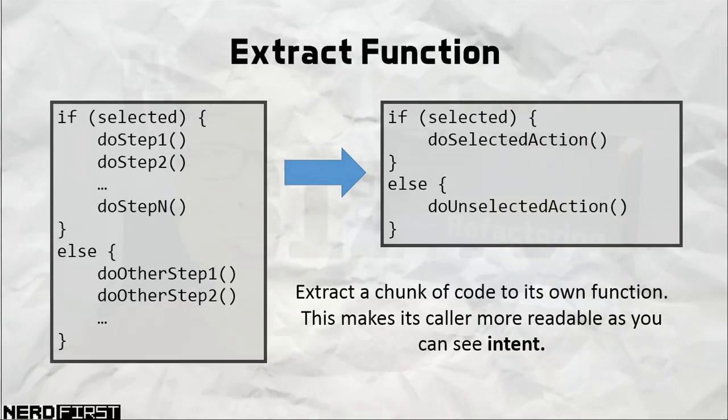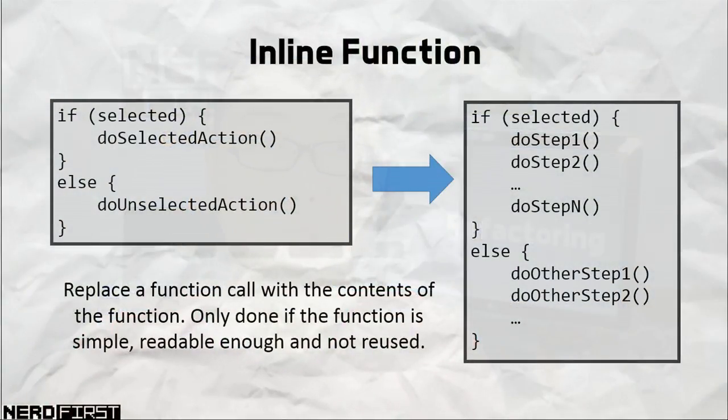Now let's go into the organizational aspect. There are two techniques for moving things around: extracting and inlining. When you have a very long function, you can extract part of it as a separate function — this is called extract function refactoring. Its counterpart, inlining a function, means substituting a function call back directly into the code. Inlining can be useful if having the function separately is entirely redundant and doesn't affect readability.